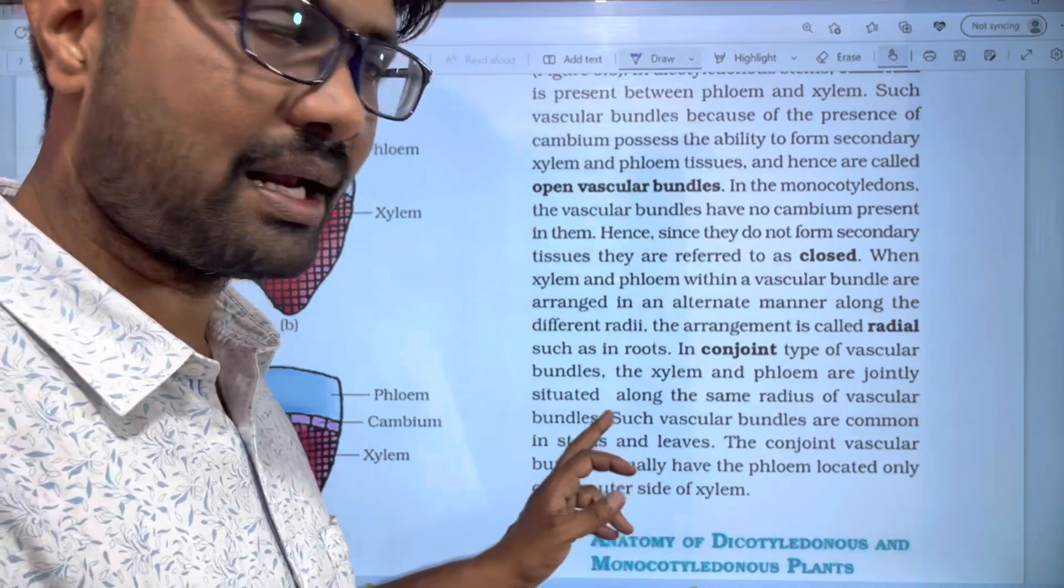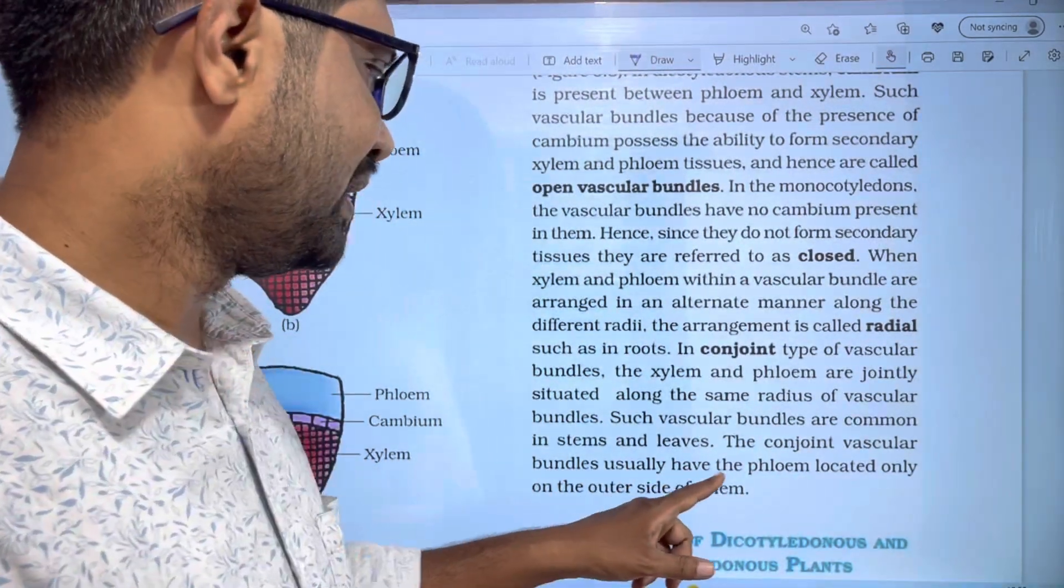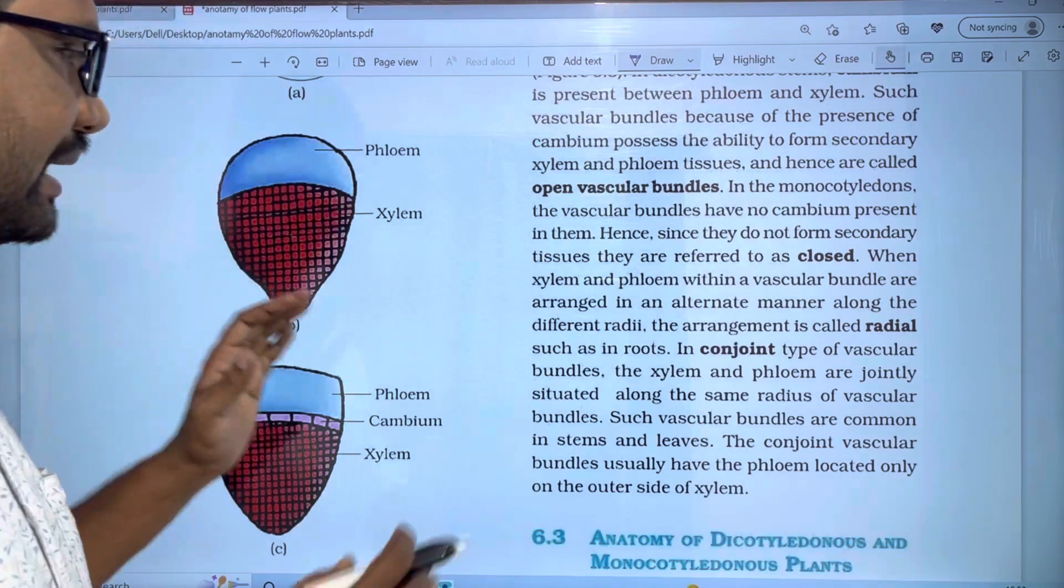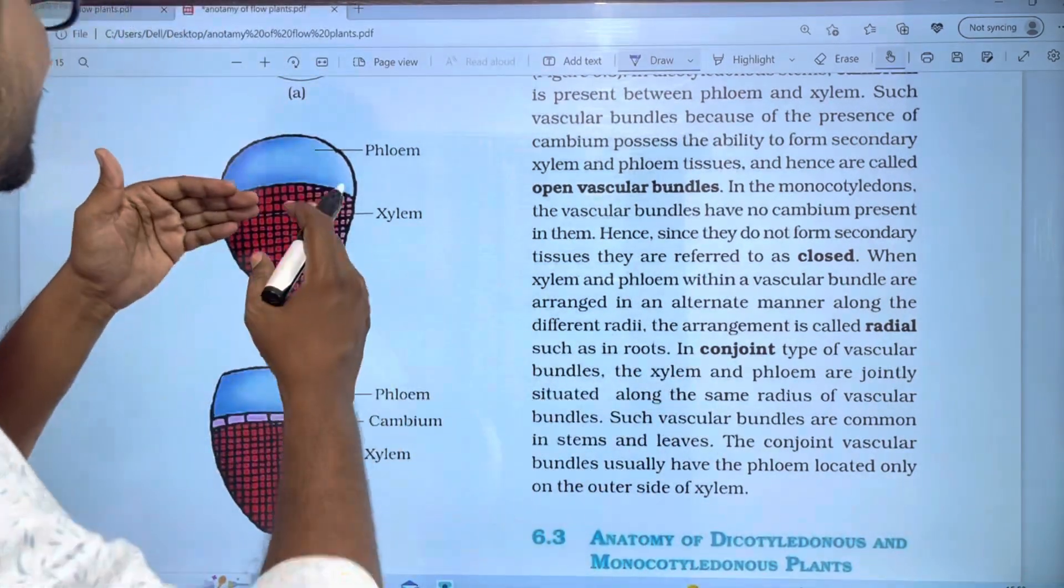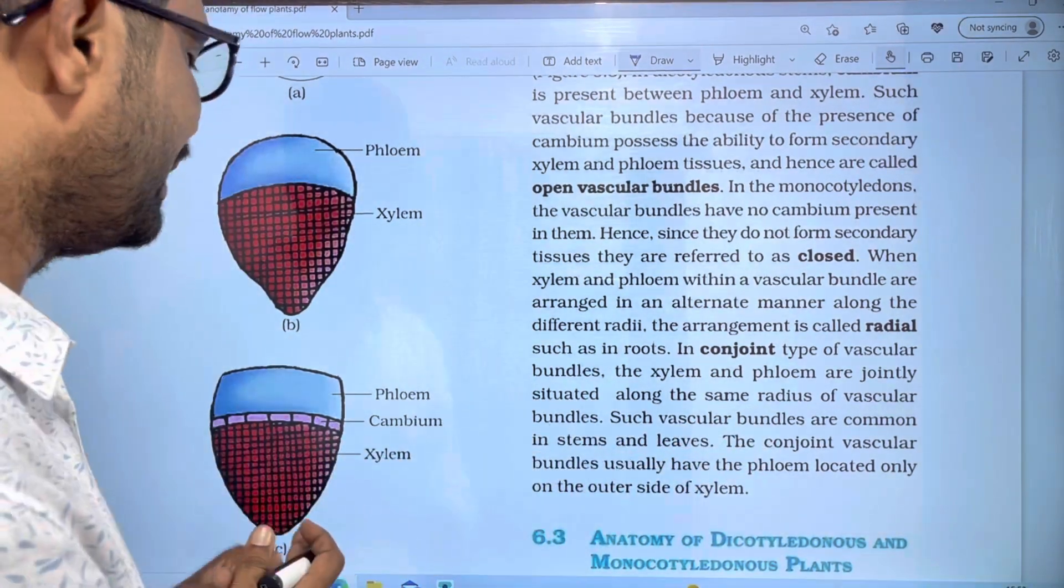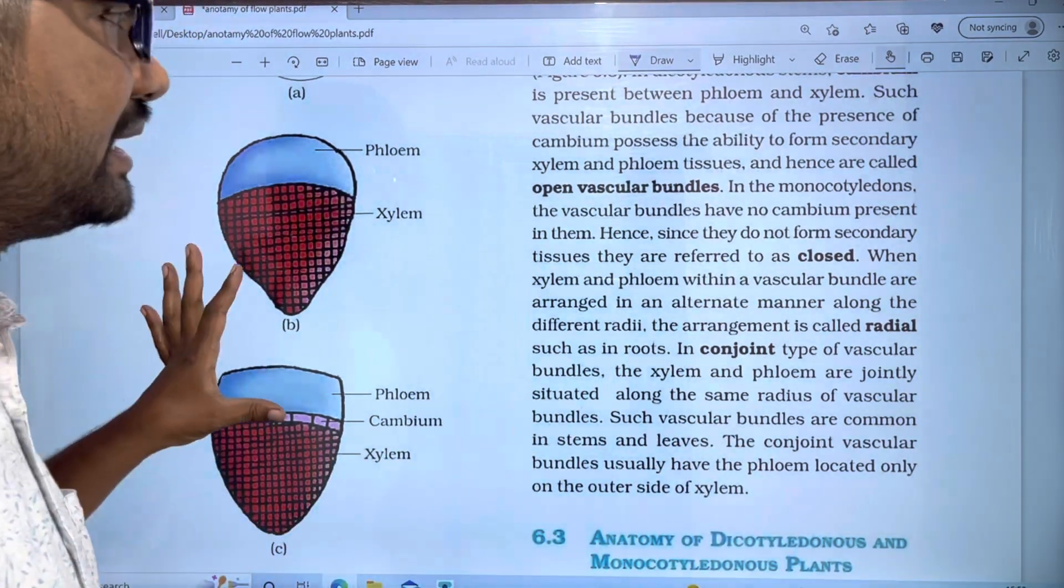The conjoint vascular bundles are common in stems and leaves. The vascular bundles usually have the phloem located on the outer side of xylem in conjoint vascular bundles.